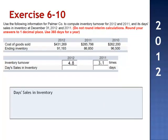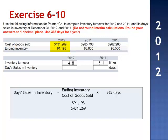To calculate day sales in inventory, we take the ending inventory balance and divide it by cost of goods sold and then multiply by 365, the number of days in the year. Ending inventory is $91,193. We divide that by cost of goods sold $431,269 and multiply by 365. We have 77.2 days of sales in inventory.